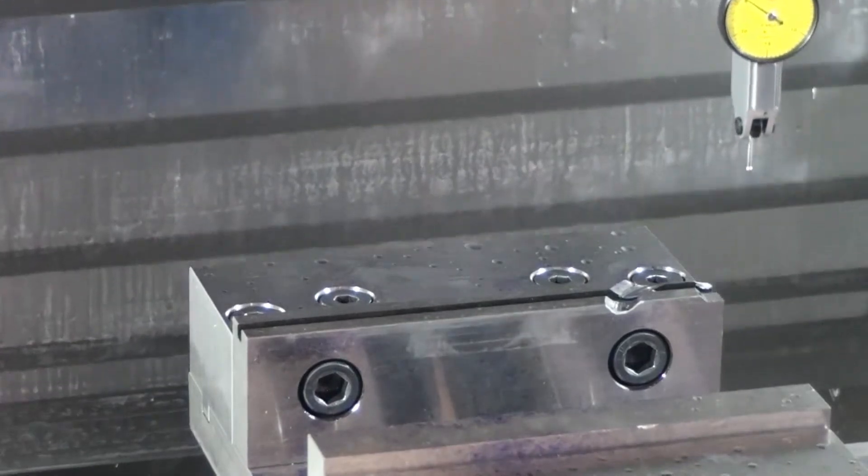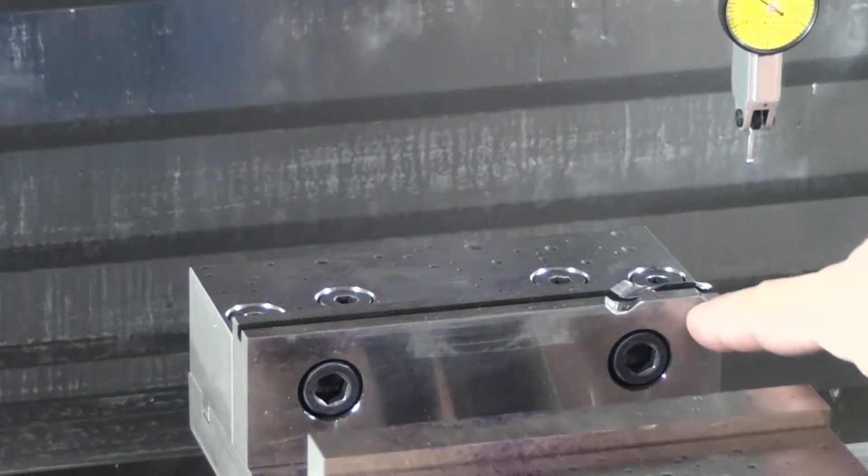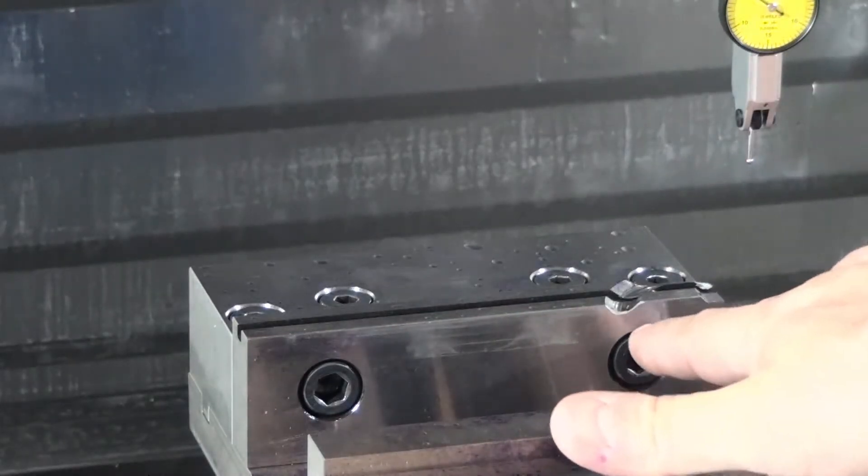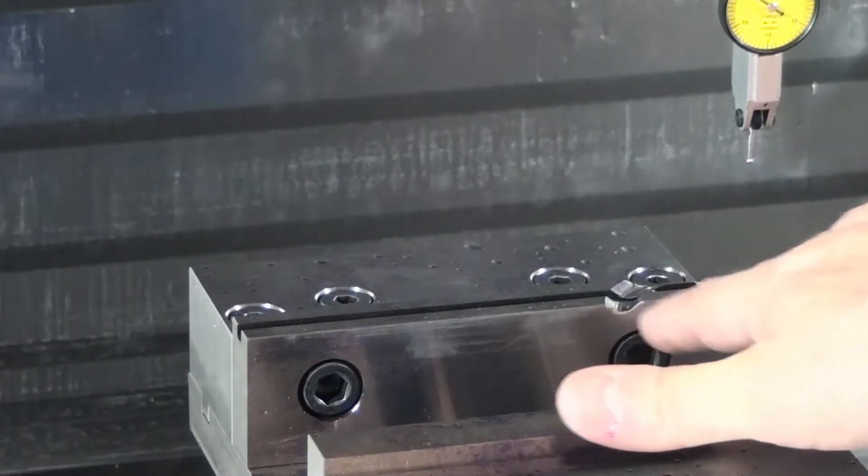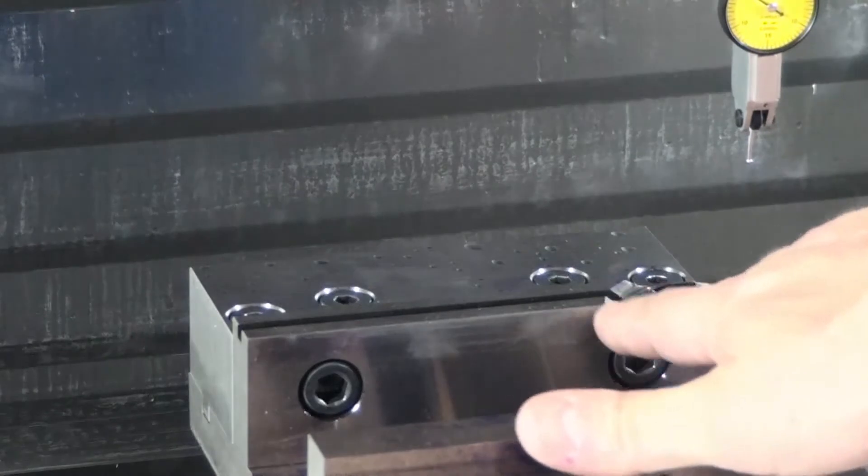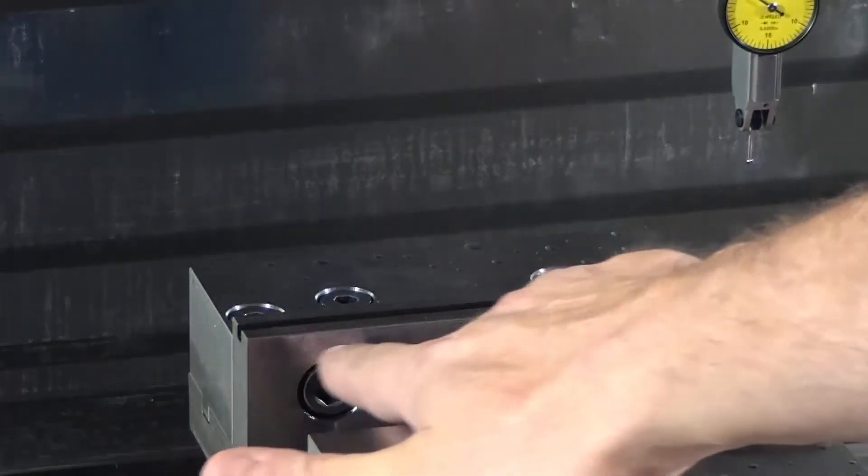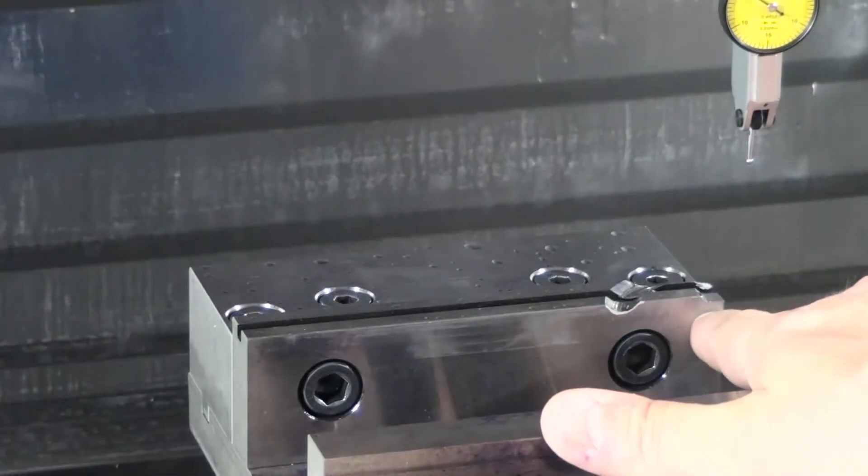Now the part that I'm trying to indicate is this section of the vise right here, so above the bolts and below where this vise has been machined. There's a nice straight section right in here that I want to go ahead and indicate.